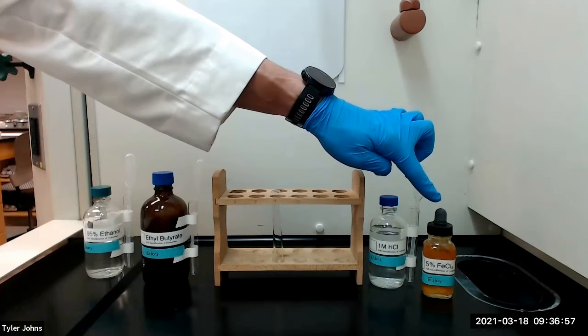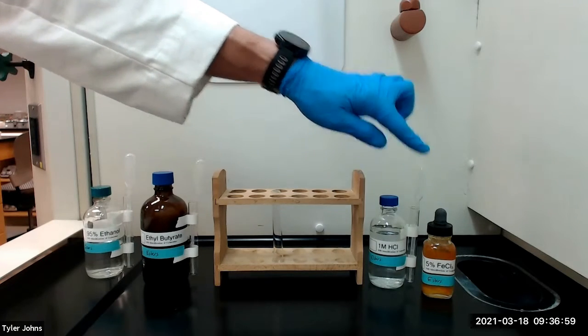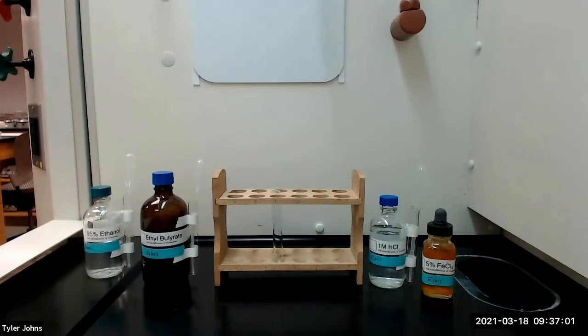We will then add one to two drops of 5% ferric chloride solution. The appearance of a burgundy, magenta, or reddish brown color indicates a positive ferric chloride test.